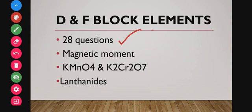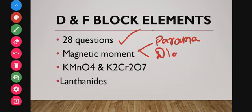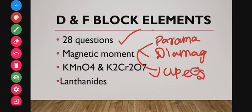In D and F block elements, you have to know about magnetic moment — identifying whether a compound is paramagnetic or diamagnetic, and how many unpaired electrons are present. You also have to know about the preparation process and chemical reactions of potassium permanganate and potassium dichromate, which are really very important.